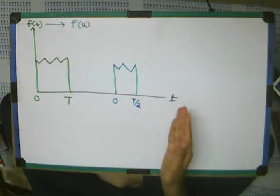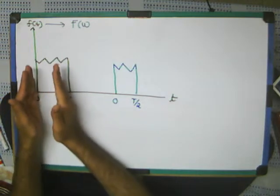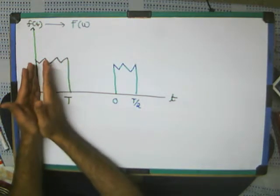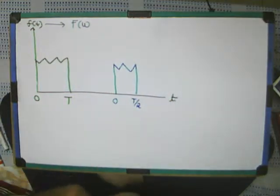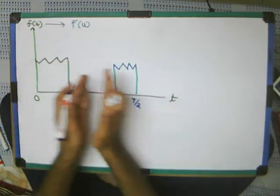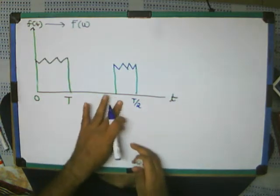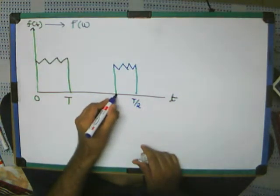Because we have first compressed it till T by 2, and then we have shifted it till at this point. Let me just add it down, and then we have shifted it till at this point. Let me say this point is not 0.